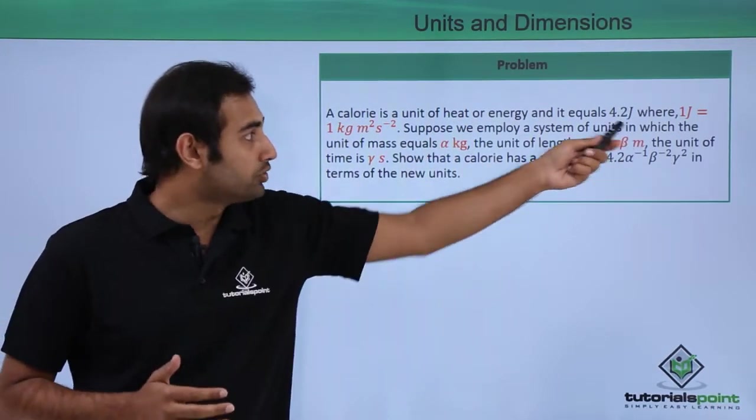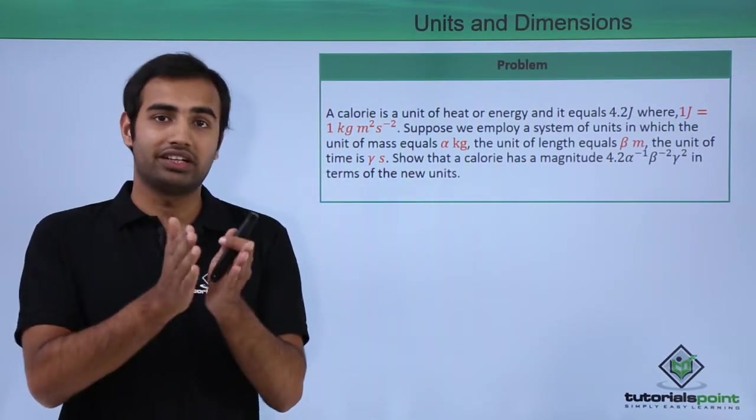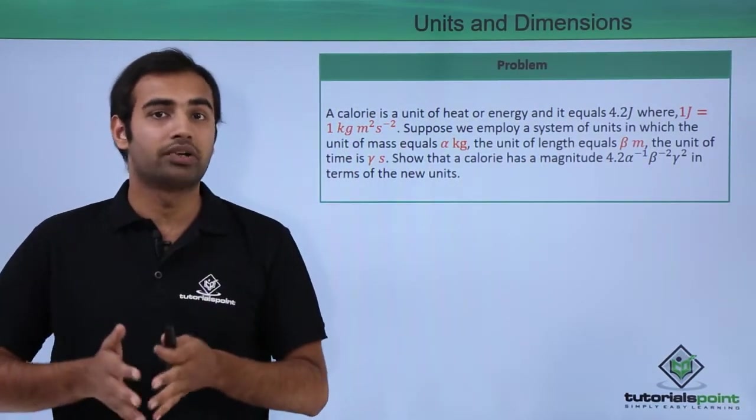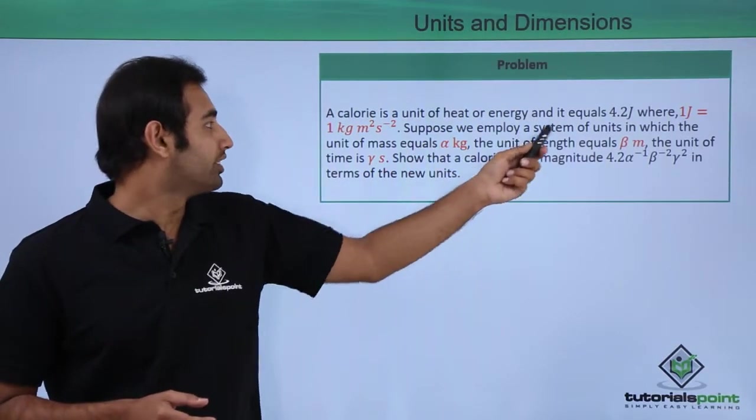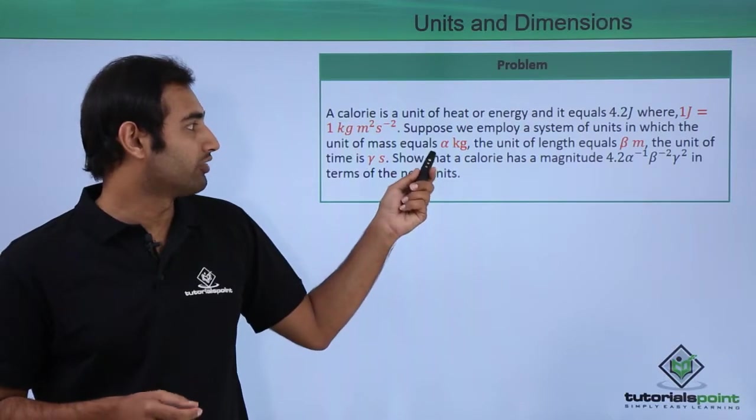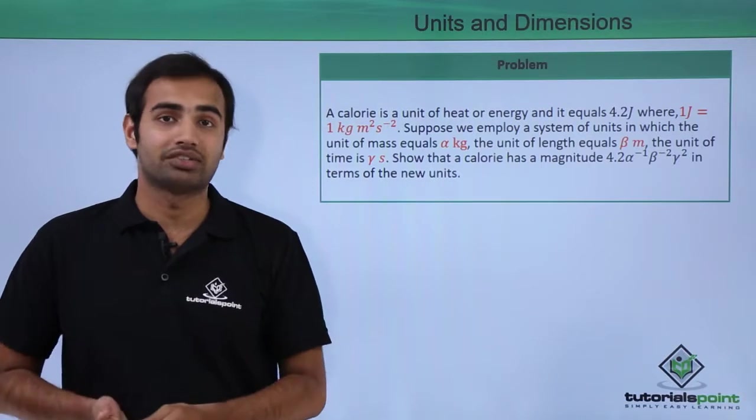Also 1 joule is defined as 1 kg meter square per second square. That's how 1 joule is expressed in terms of the more fundamental units of SI. Suppose we employ a system of units in which the unit of mass equals alpha kg, the unit of length equals beta meters, the unit of time equals gamma second.